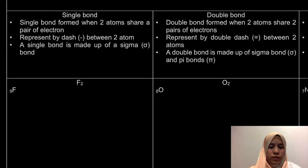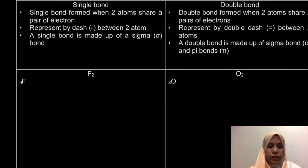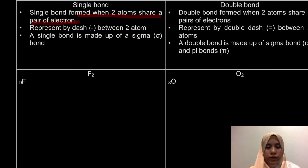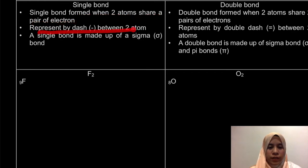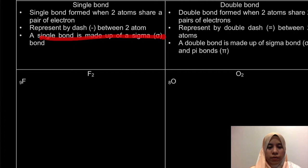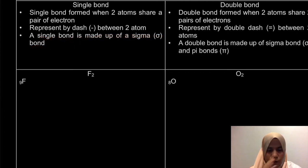For the single bond, a single bond forms when two atoms share a pair of electrons. It is represented by a dash between two atoms, and the single bond is made up of a sigma bond. For example, we have our fluorine.